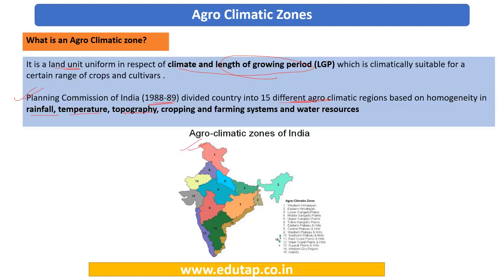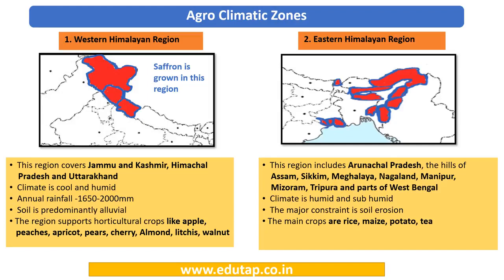As you can see in the picture, the 15 climatic zones of India. The first zone is the Western Himalayan Region, covering the hilly states of Jammu & Kashmir, Himachal Pradesh and Uttarakhand. The climate is cool and humid, and the soil is predominantly alluvial. It supports horticultural crops like apple, peaches, apricot, pear and cherry. Importantly, saffron is also grown in this region.